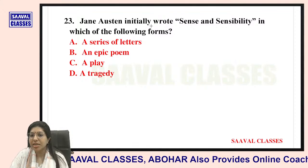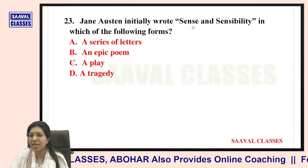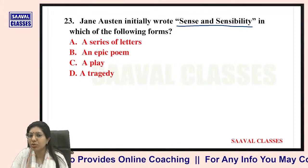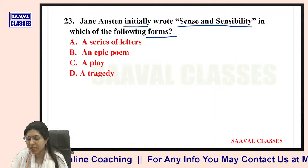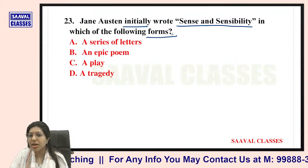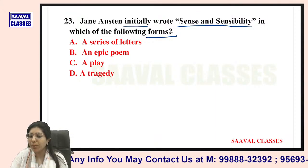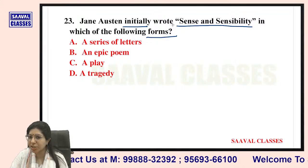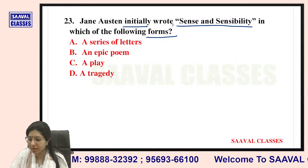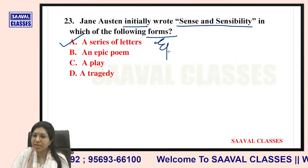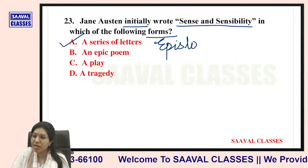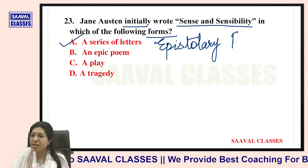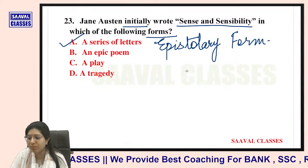Question number twenty-three: Jane Austen initially wrote Sense and Sensibility in which of the following forms? Options are a series of letters, an epic poem, a play, or a tragedy. The answer is a series of letters — epistolary form. That is why she was inspired by Richardson.